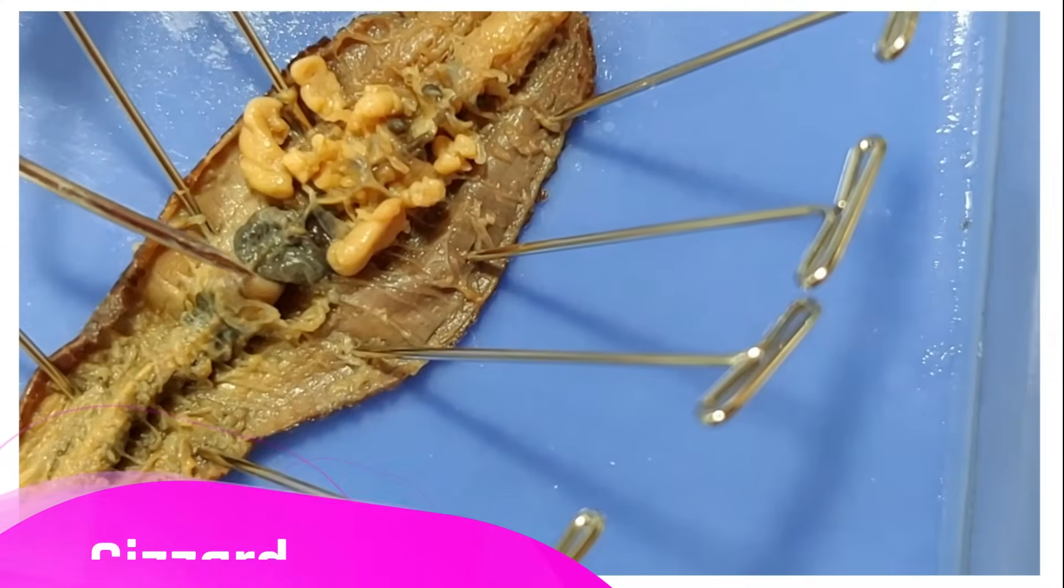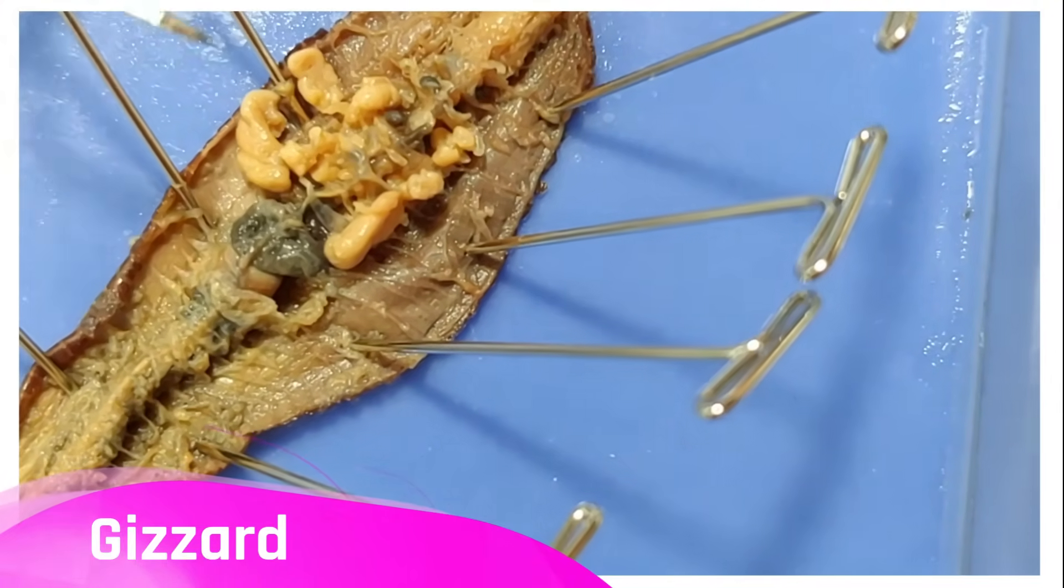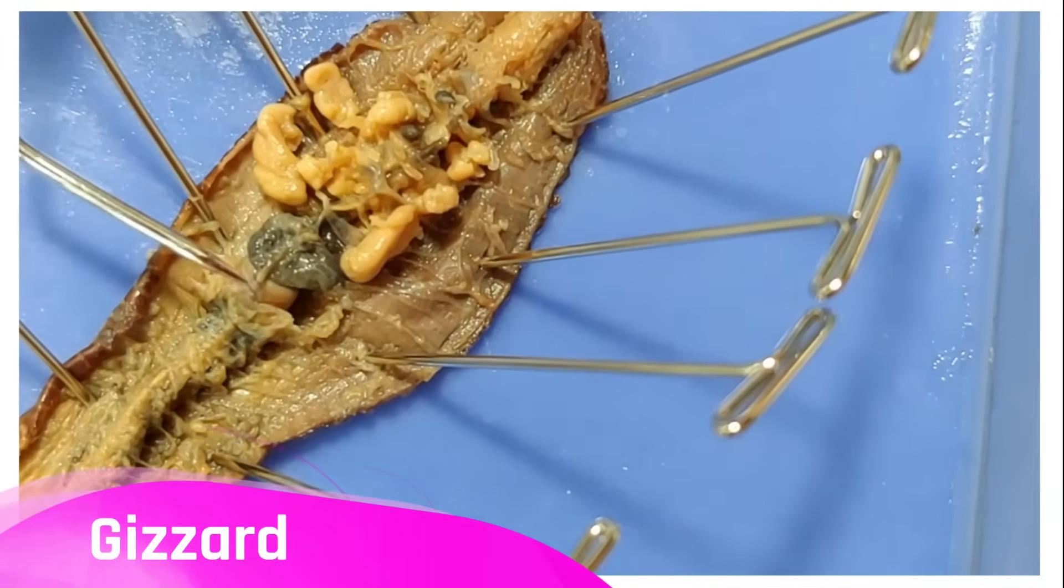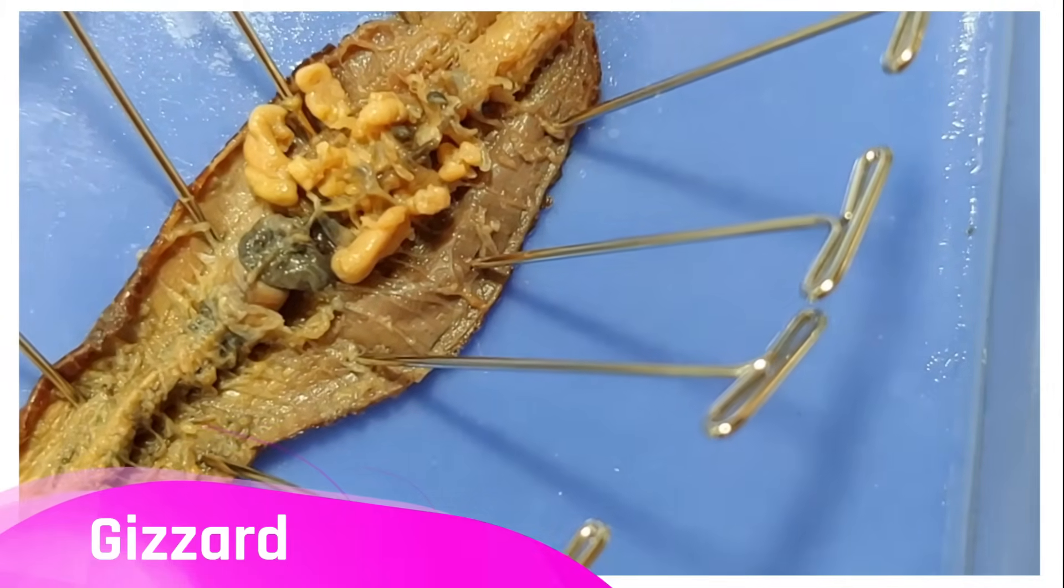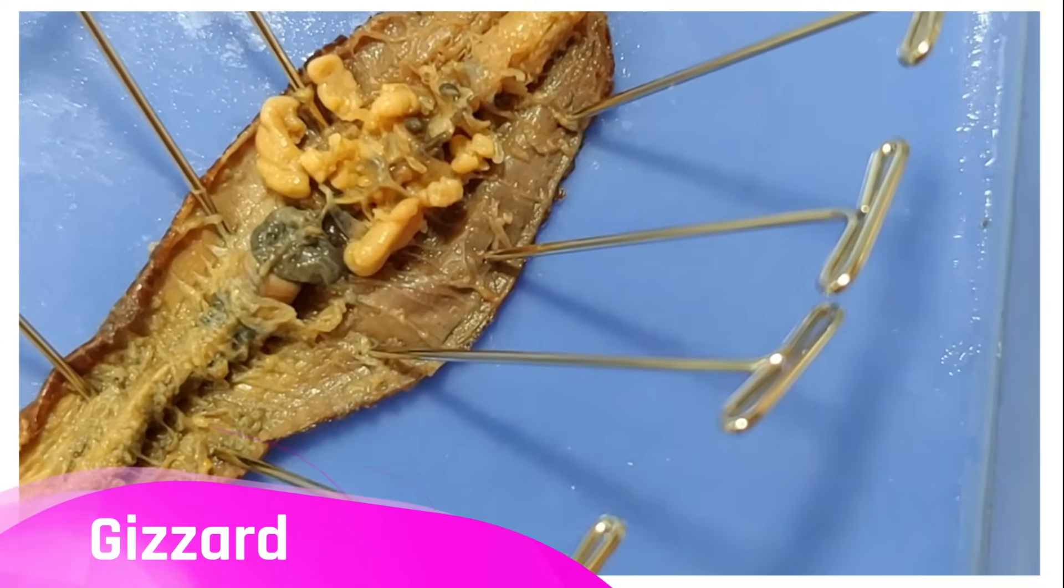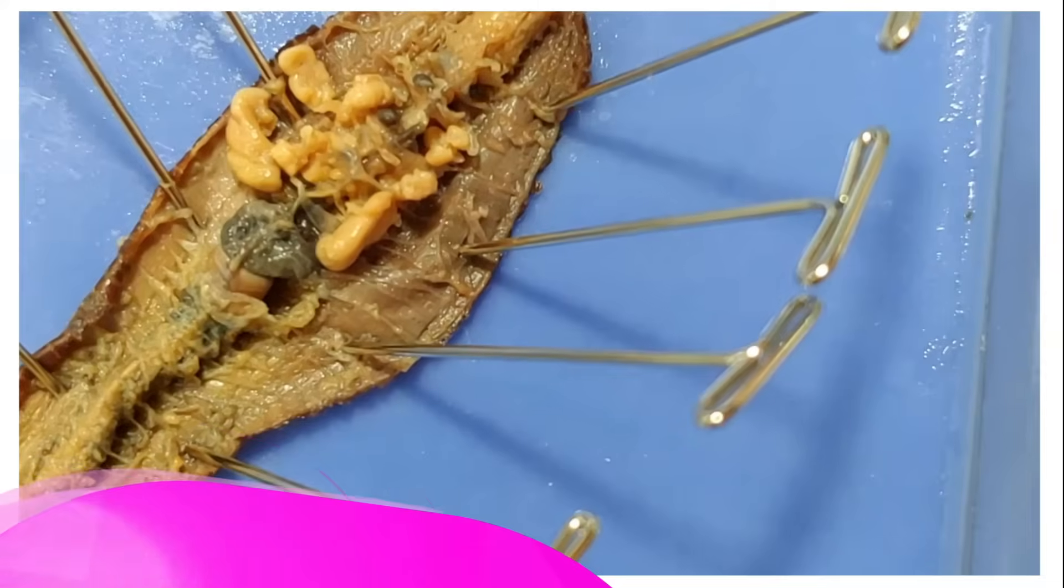Next up is the gizzard. When I poke the gizzard, it barely moves. The gizzard has a thicker muscle lining than the crop because it does all the heavy lifting. It carries the entire digestive system on its metaphorical shoulders. The gizzard functions in mechanical digestion by contracting and grinding up the food inside it.